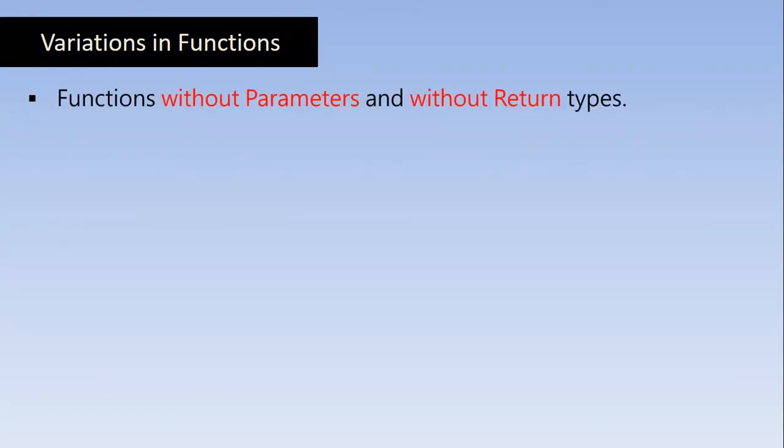The first one is functions without parameters and without return types. The best example for this is the add function we ran in the last class, where it calculates the sum of two numbers. We haven't passed any parameters and it doesn't return anything, so that is without return type.